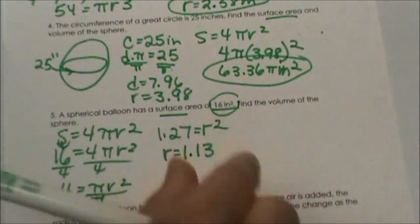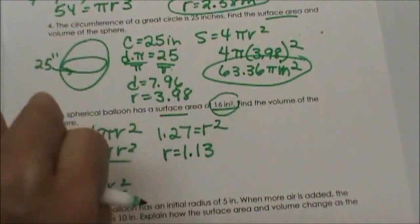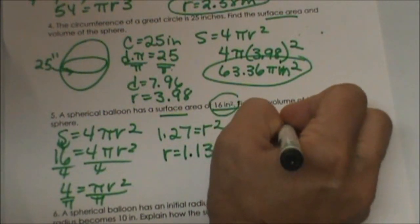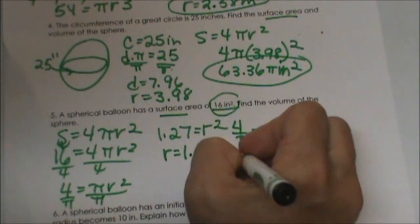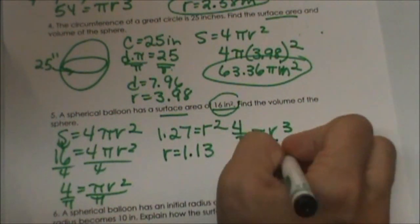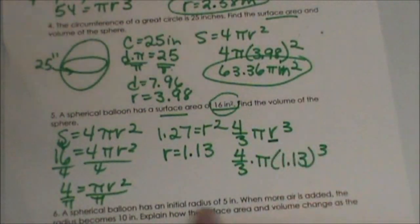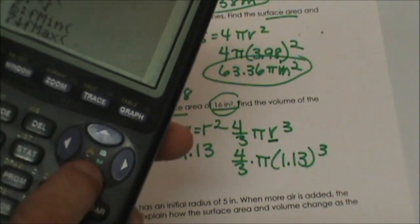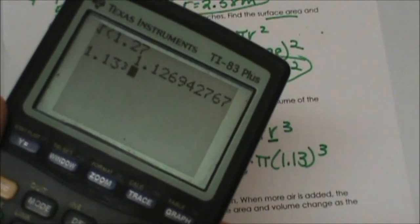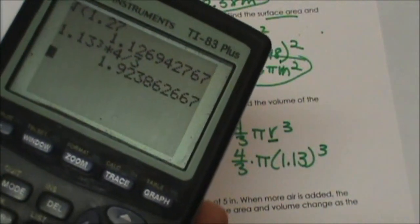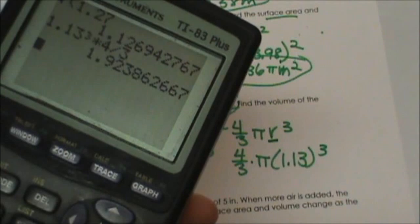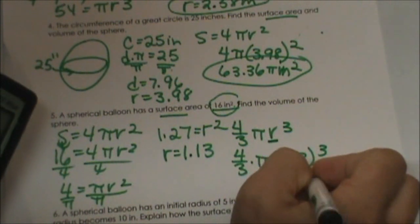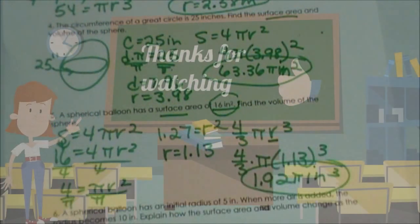So we have gone backwards — we took the formula we know and worked back to the radius. Now we go forward again. We take our volume formula, 4/3 πr³, and plug in 1.13. So 4/3 times pi times 1.13 cubed. 1.13 cubed, then times 4/3, gives us 1.92π. So just check yours and make sure that is what you are getting for your volume.